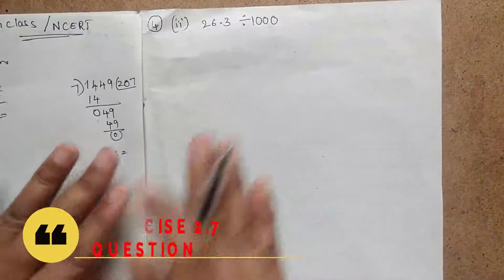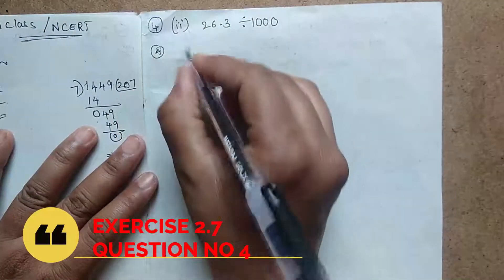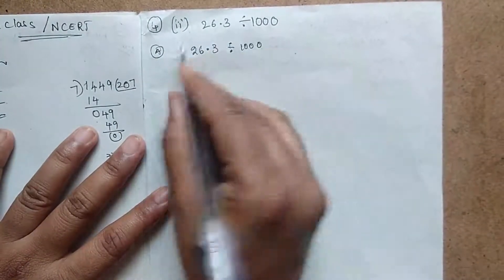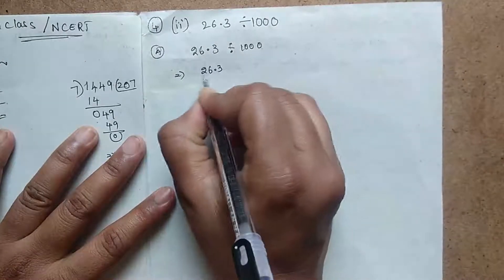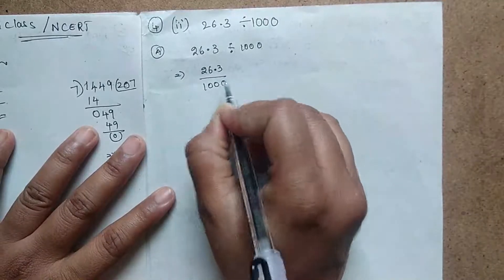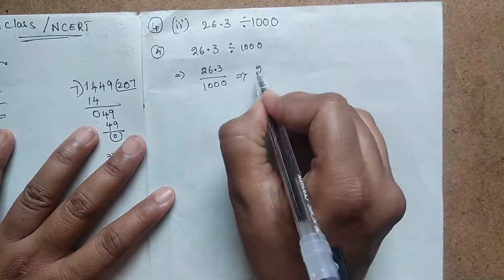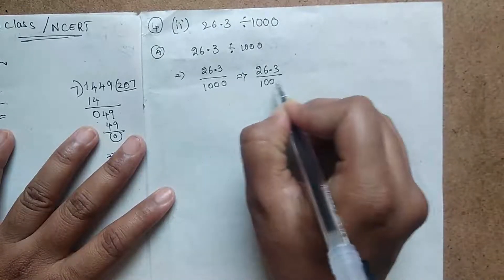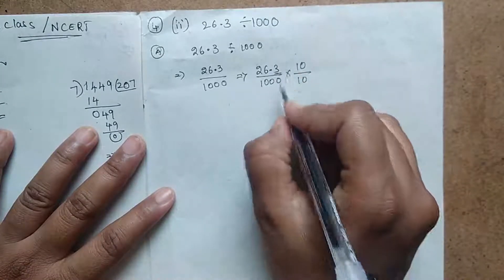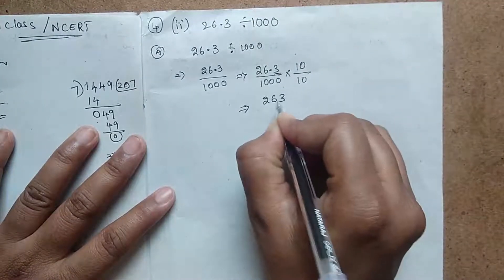Now let's move to another example of decimal division. The question is 26.3 divided by 1000. Here 26.3 has one decimal place — it is in the tenths place — but the denominator doesn't have any decimals. So what we have to do is multiply both the numerator and denominator by 10, because it is in the tenths place. We have to multiply both simultaneously, so here we get 263 by...